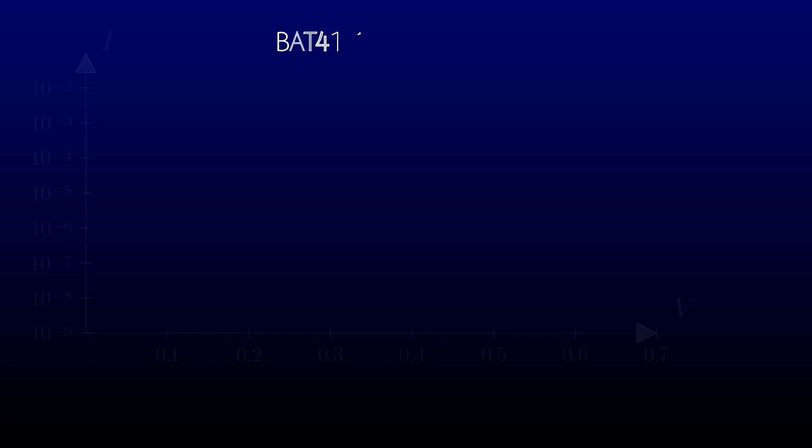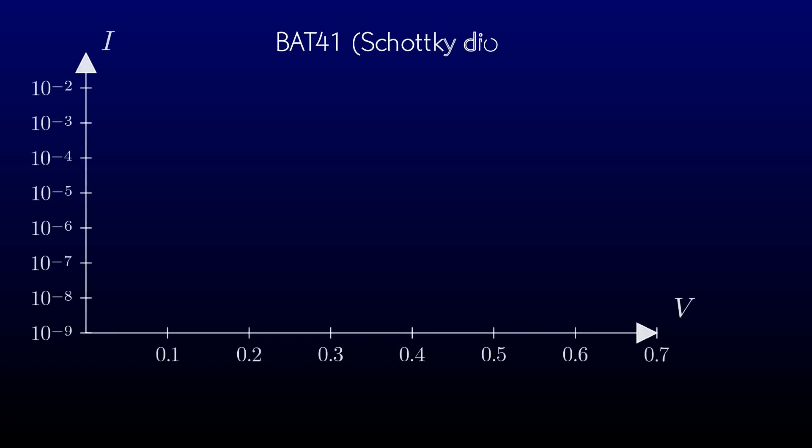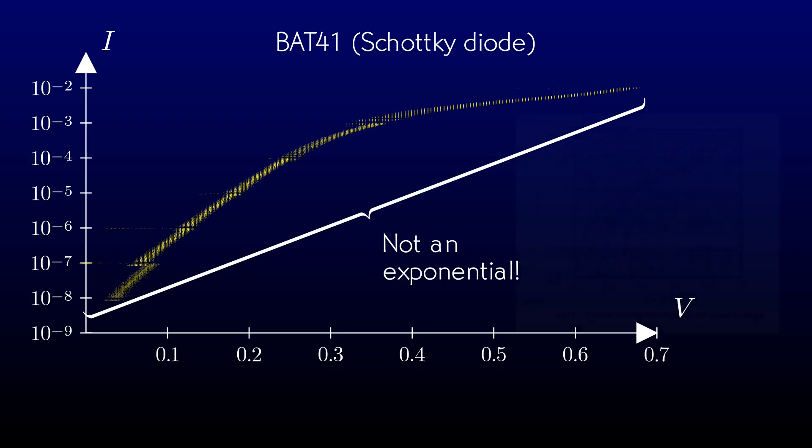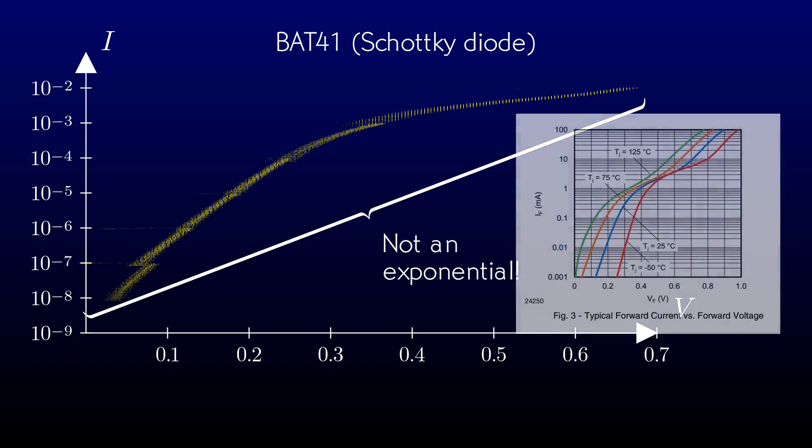The law does break down for some devices, such as Schottky diodes. It holds only for devices with a P-N junction. Hot carrier diodes usually have a metal semiconductor junction, and those behave differently. In fact, if you look at the current voltage curves in the BAT41 data sheet, what we observe is not too different from the picture. Nice to know.